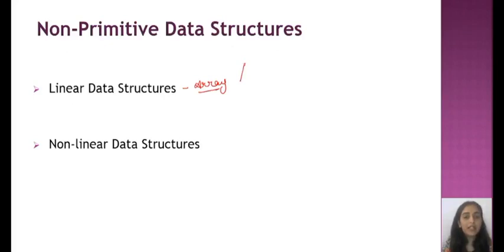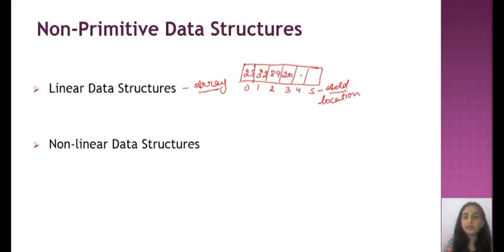In arrays, values are stored in this way: zero, one, two, three, four, and five. These are the addresses or we can say the location of the value. Values here can be anything - twenty-five, thirty-two, eighty-nine. Any value can be there and these are their addresses. So this type, which works on only one dimension, these data structures are called linear data structure.